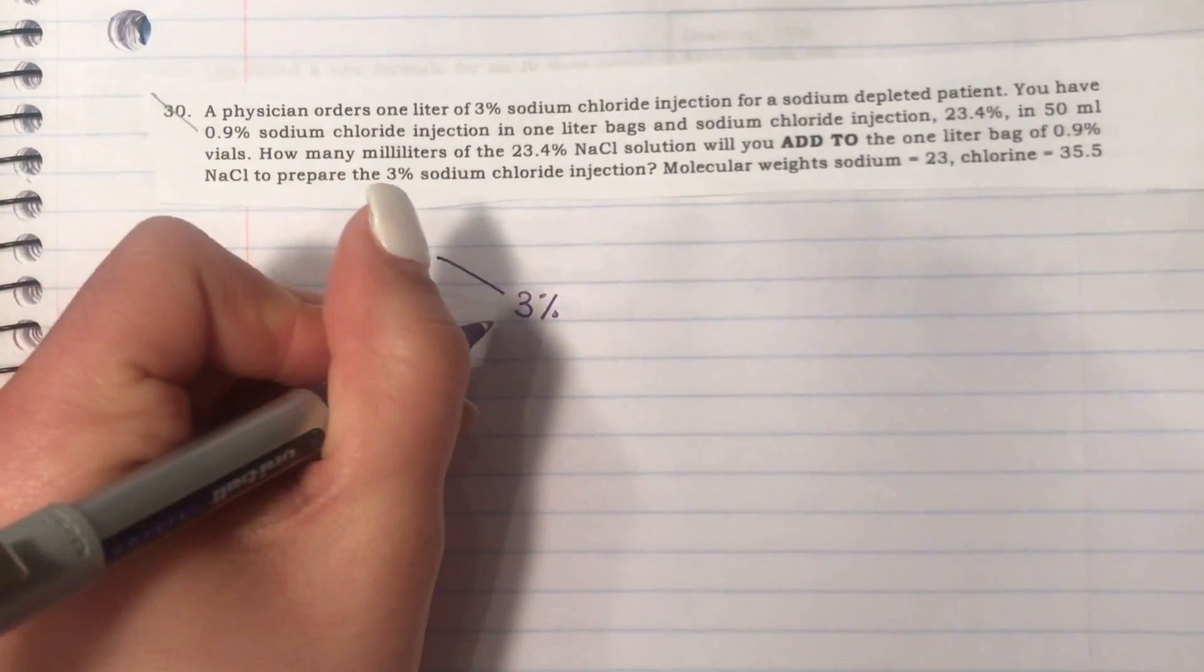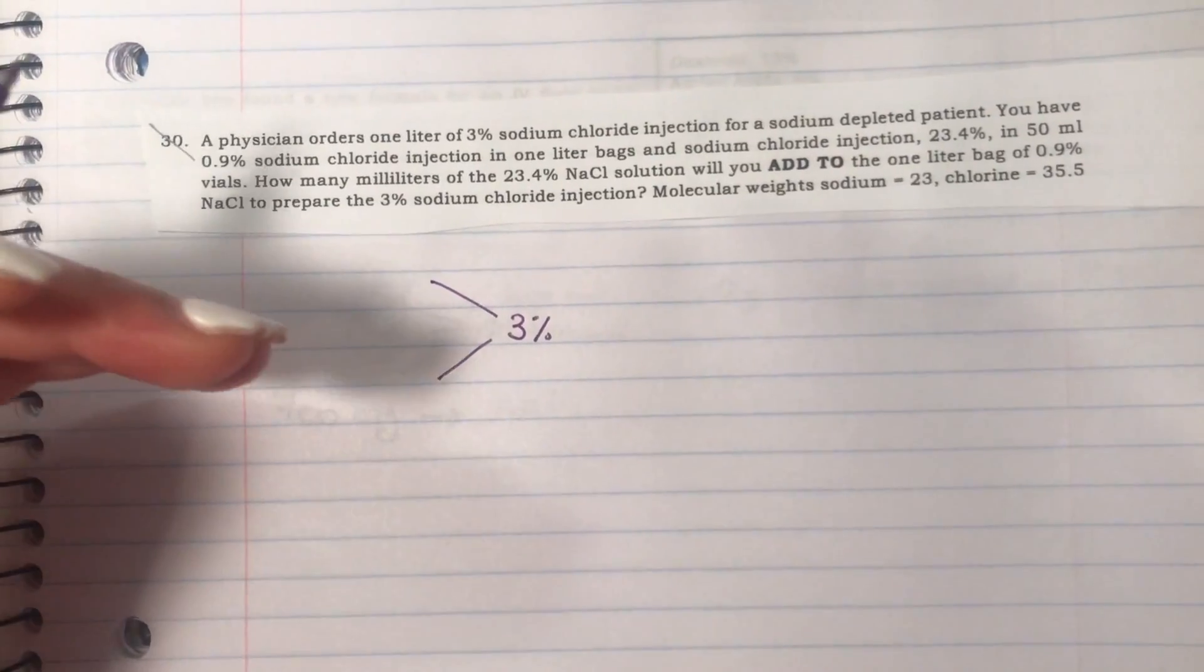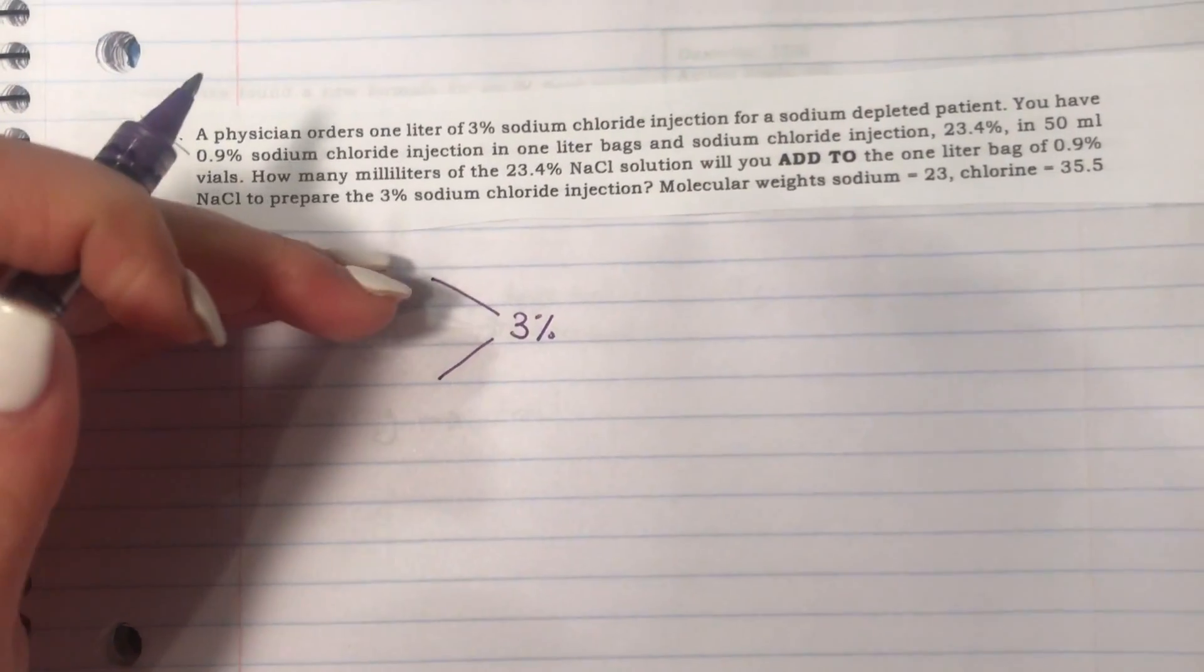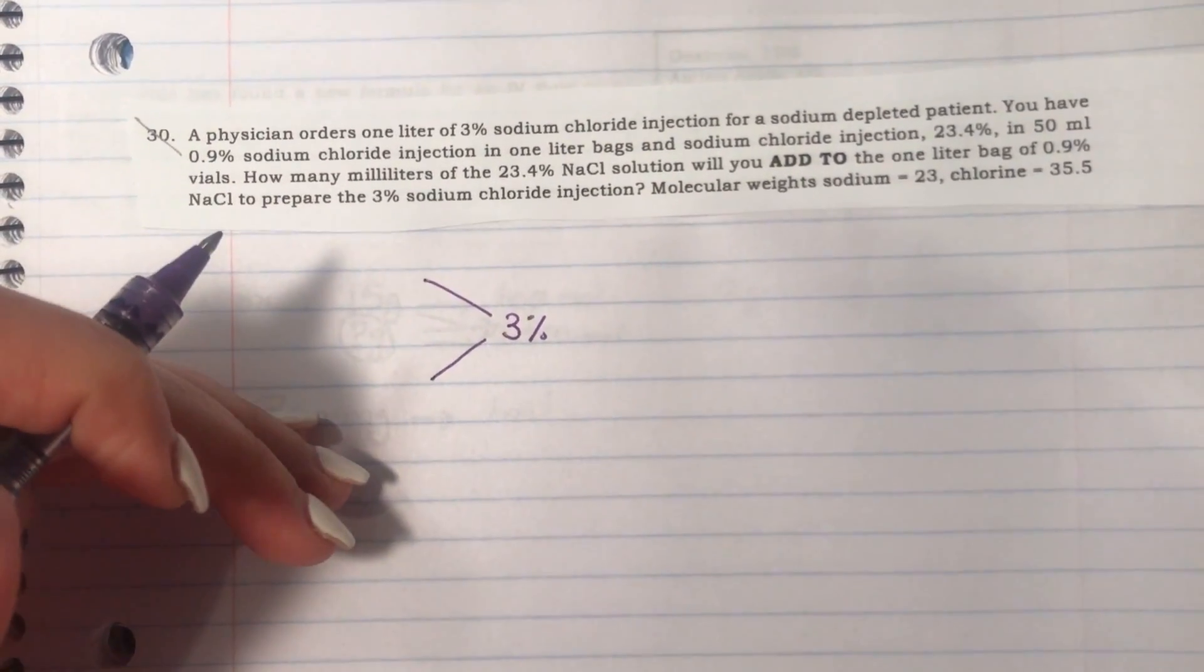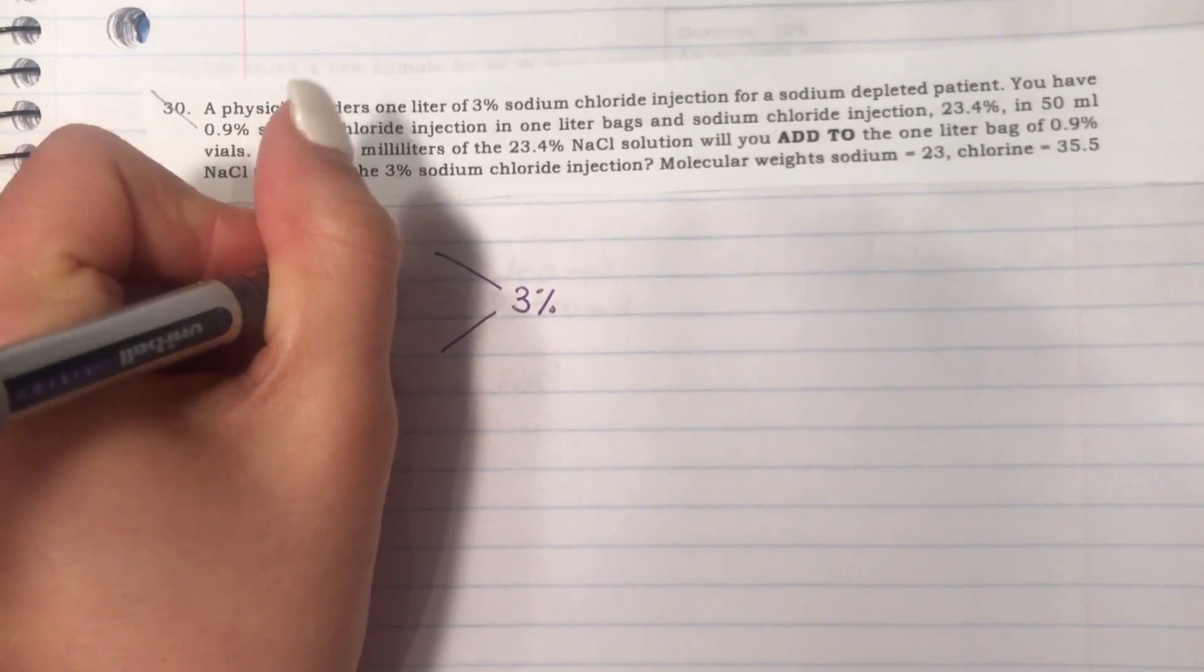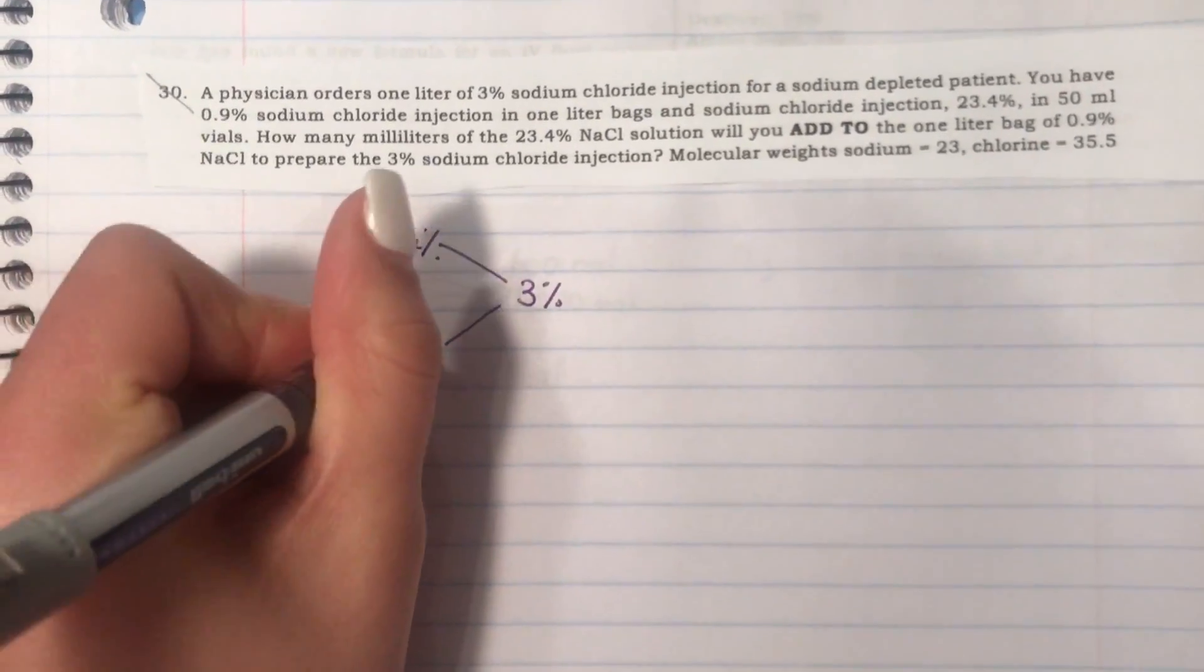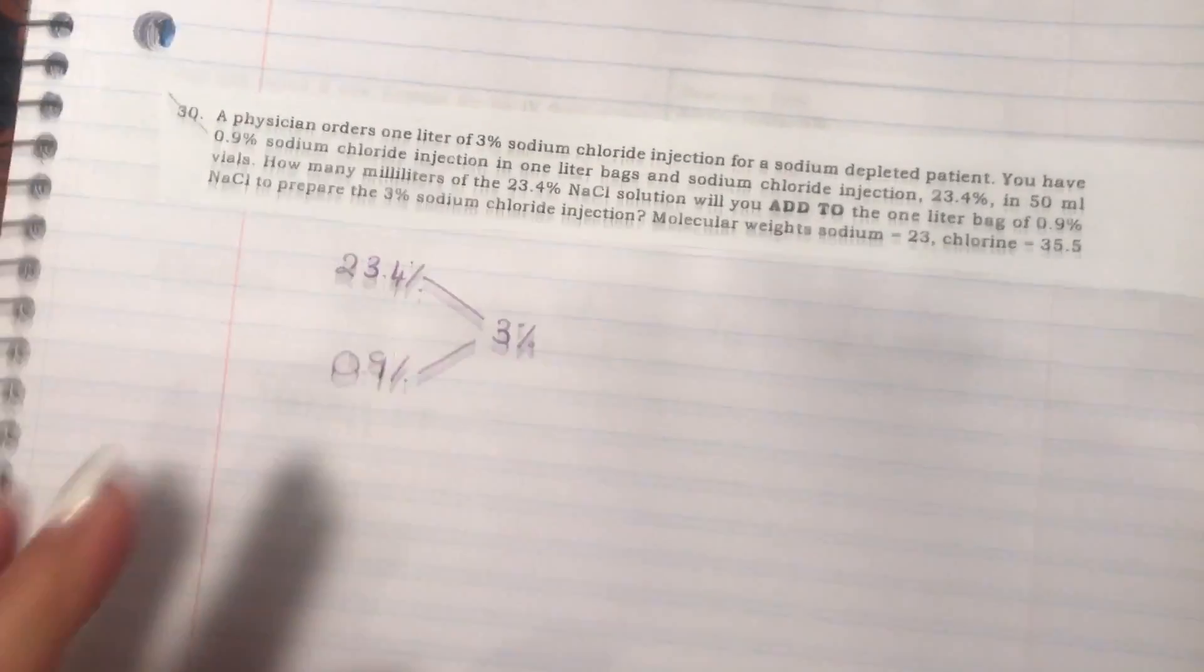After writing the percentage that you are required to prepare, you're going to put the two compounds with the higher percentage up and the lower percentage down. So the higher percentage here is 23.4% and the lower percentage is the normal saline at 0.9%.